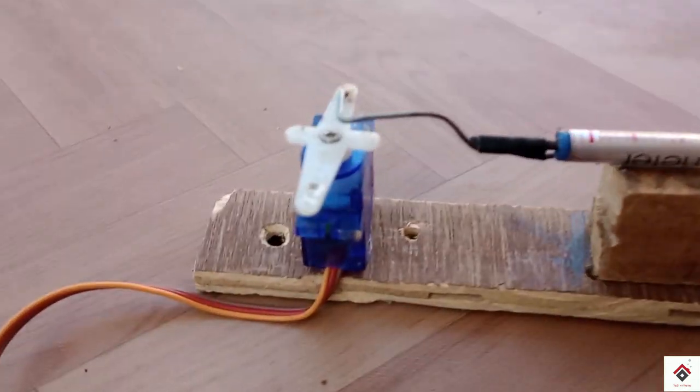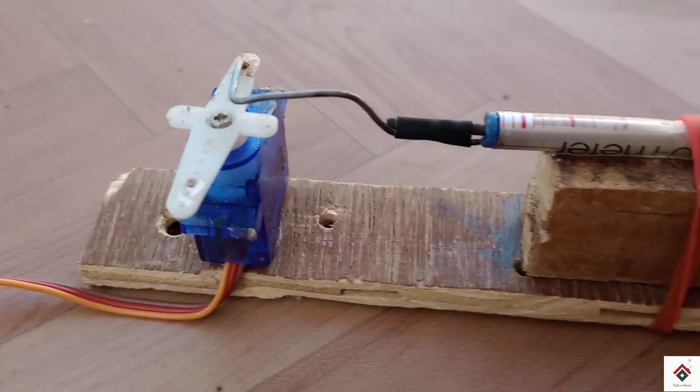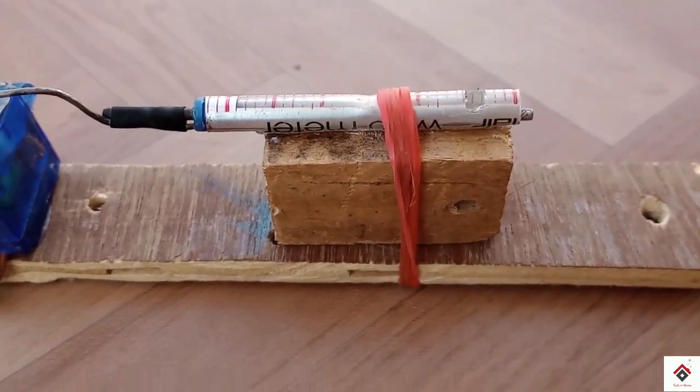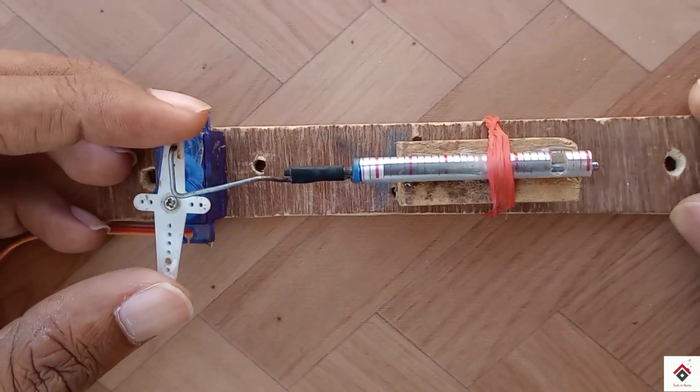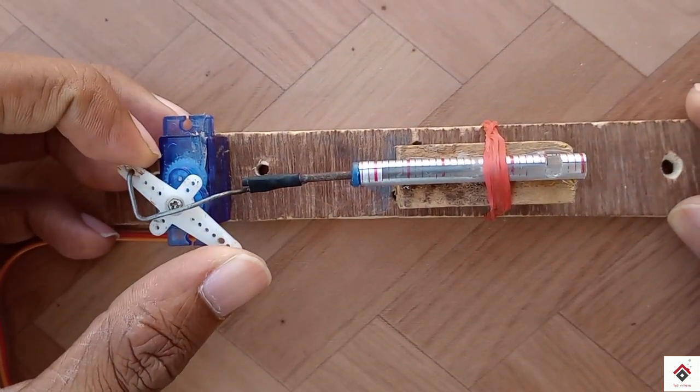In this design, the complete weight of the load will be on the iron rod and not on the servo motor. This is the lock, and this is how we drop the payload.